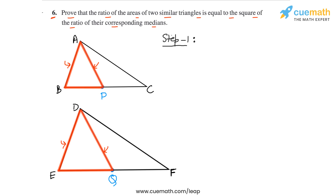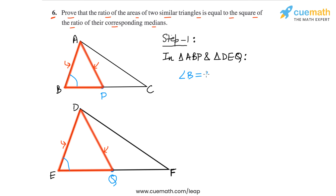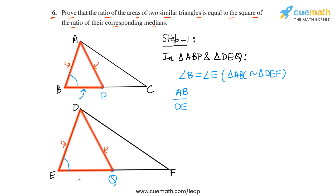Let's compare these two triangles and show that they are similar. In triangle ABP and triangle DEQ, angle B is equal to angle E because triangles ABC and DEF are similar. Also, let's take the ratio of the sides including this angle — AB by DE, and BP by EQ.